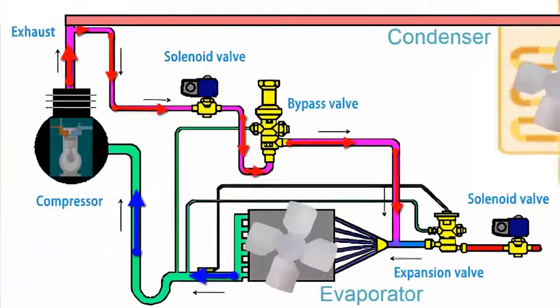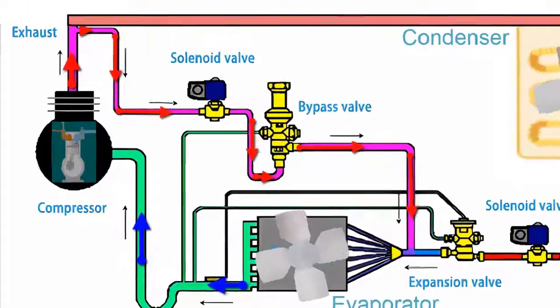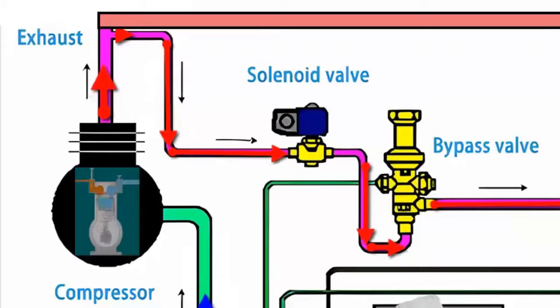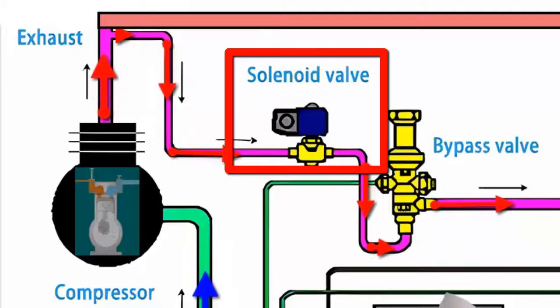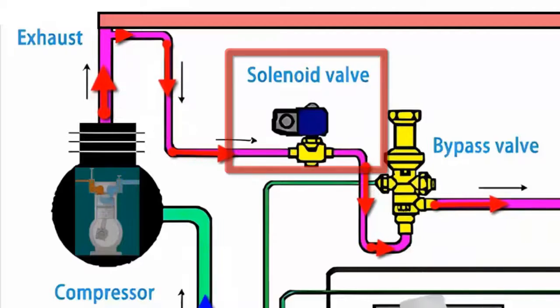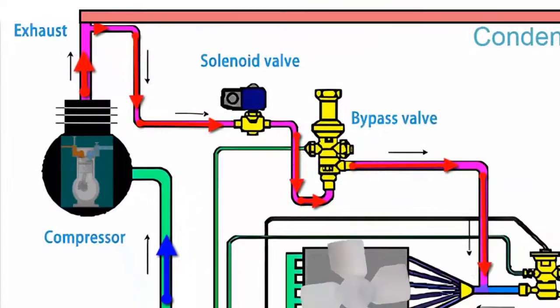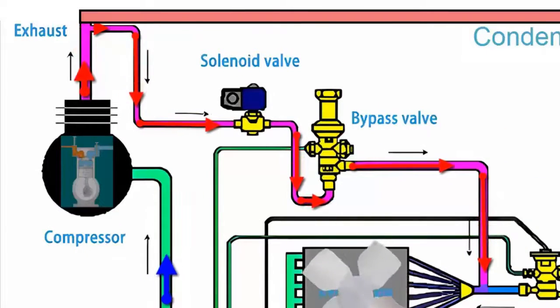First, in the compressor discharge line, there is a bypass that includes a solenoid valve. This solenoid valve controls the flow of the discharge gas into the bypass line, which connects directly to the evaporator.